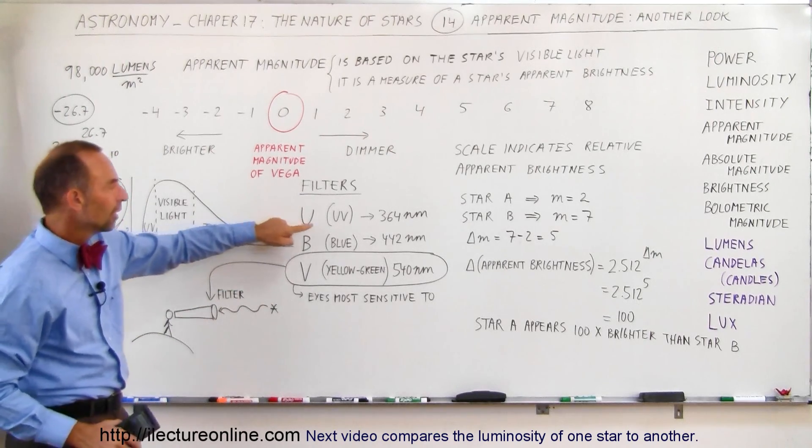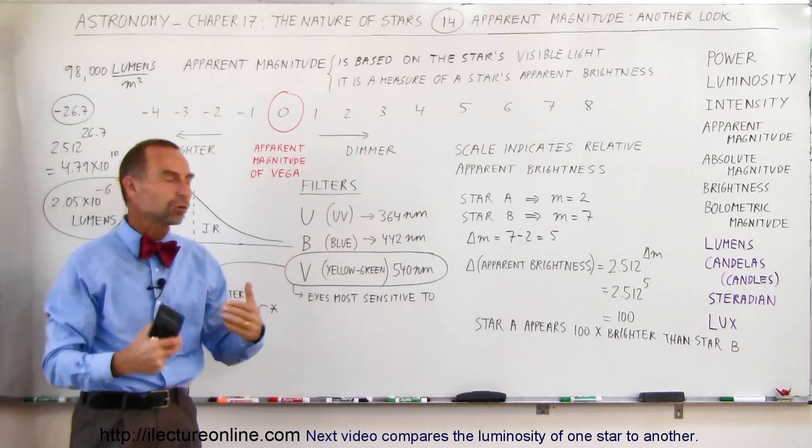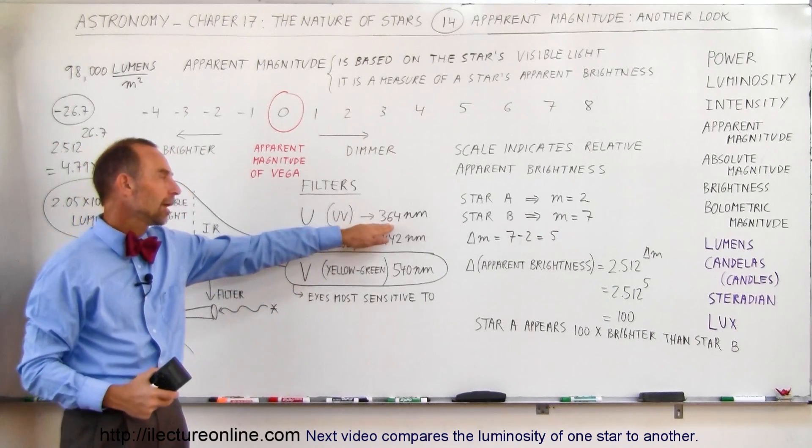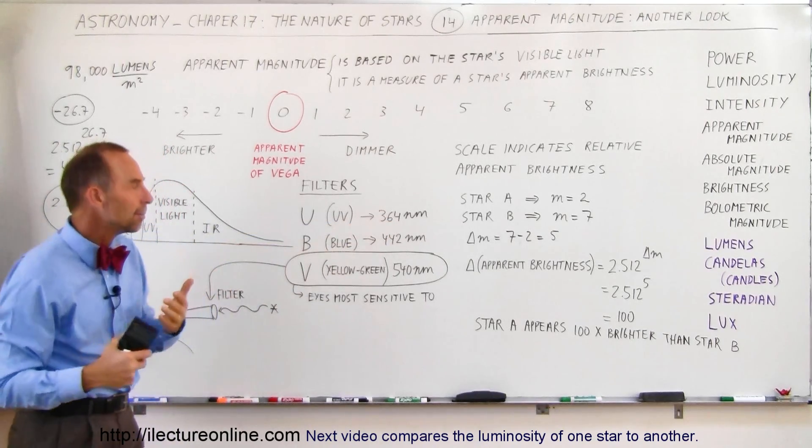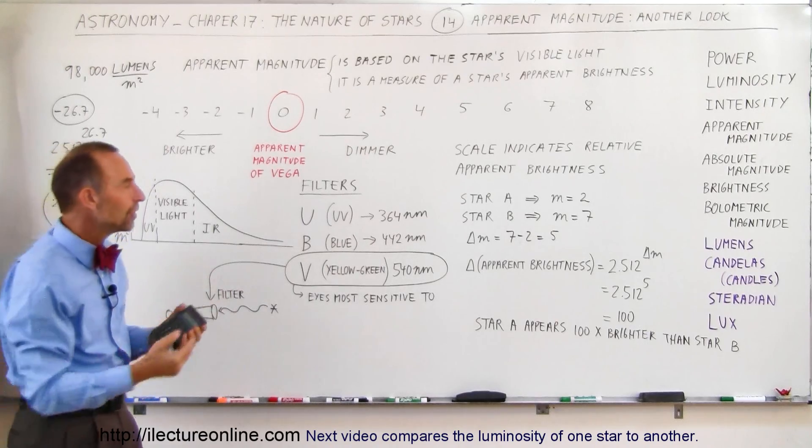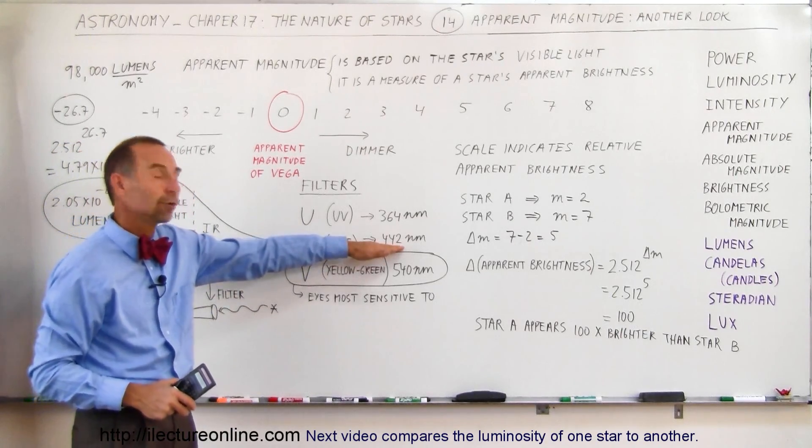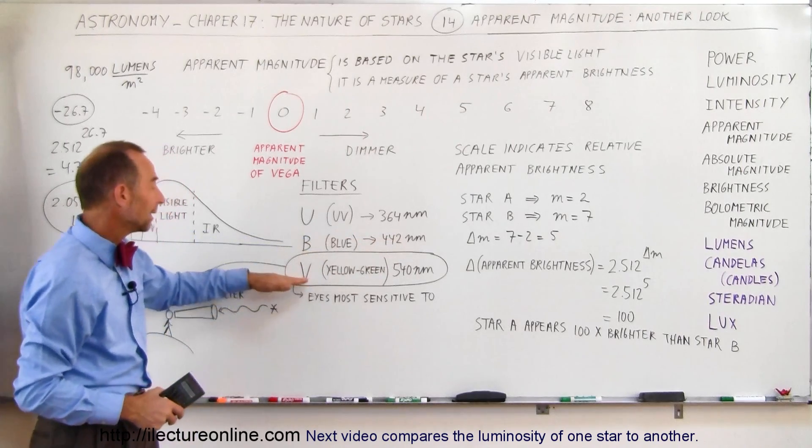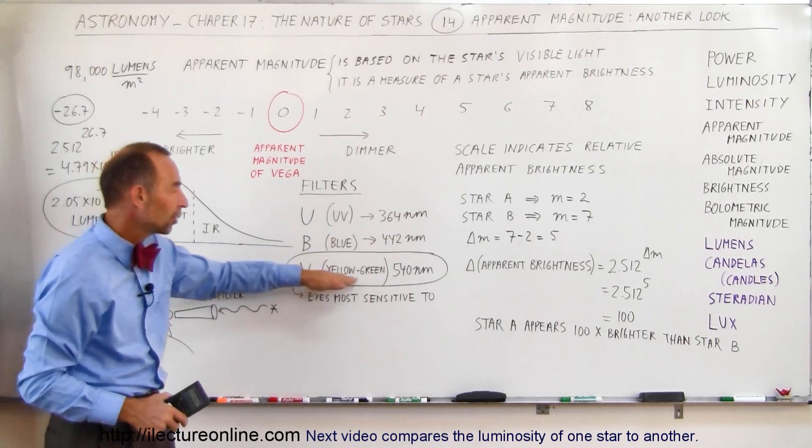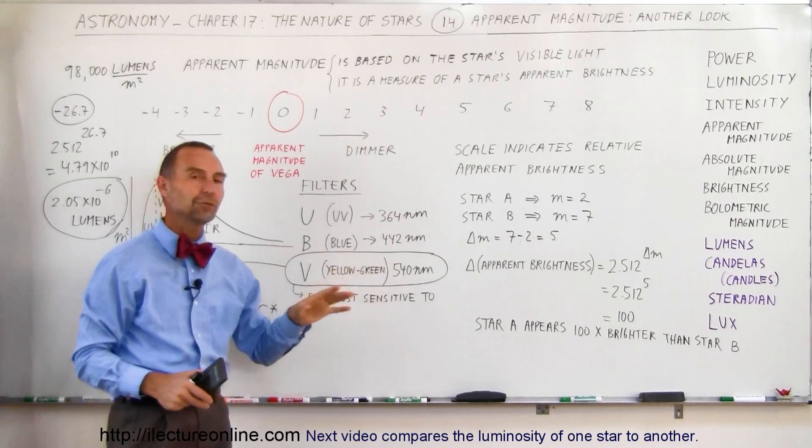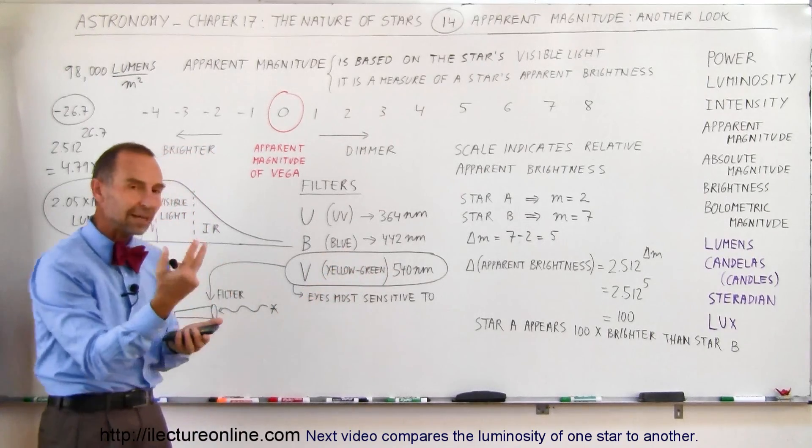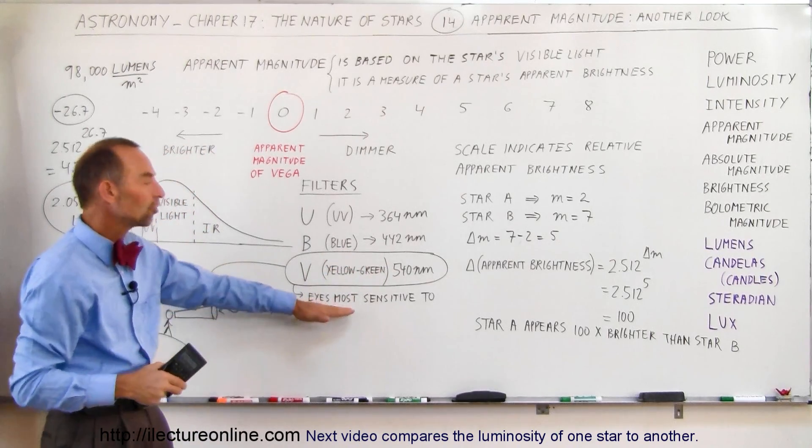And the U filter allows UV light to come through and it predominantly allows the 364 nanometer wavelength of UV to come through readily. The blue filter will pass by 442 nanometer light and then the V filter, which allows yellow-green light to come through, about 540 nanometers, allows the same kind of light to come through where the human eye is most sensitive to.